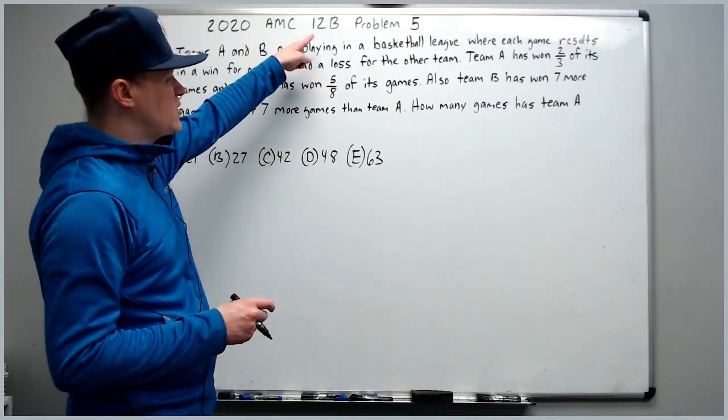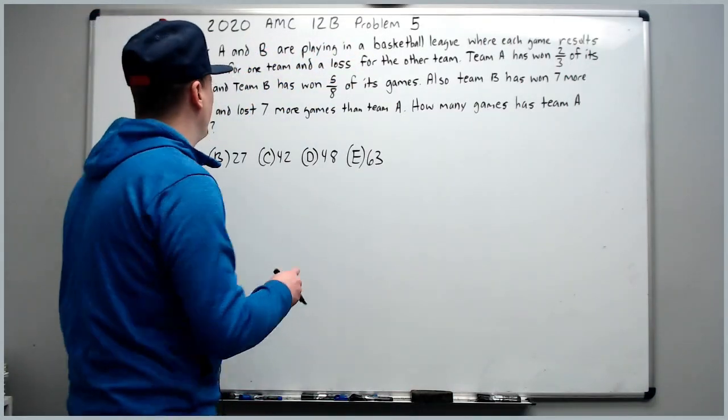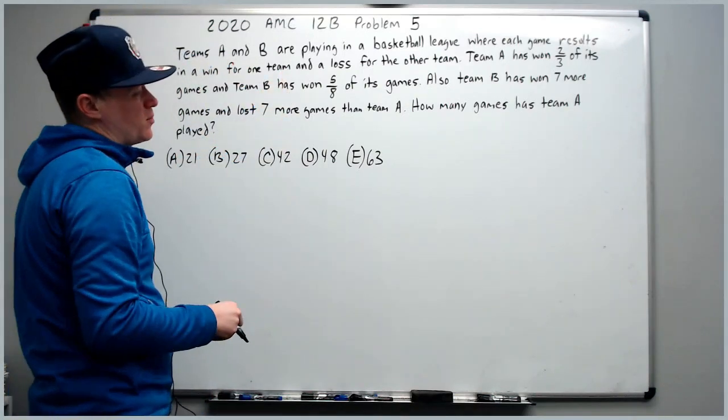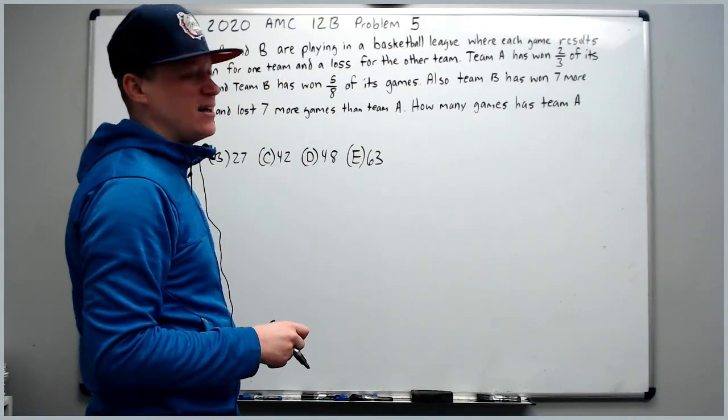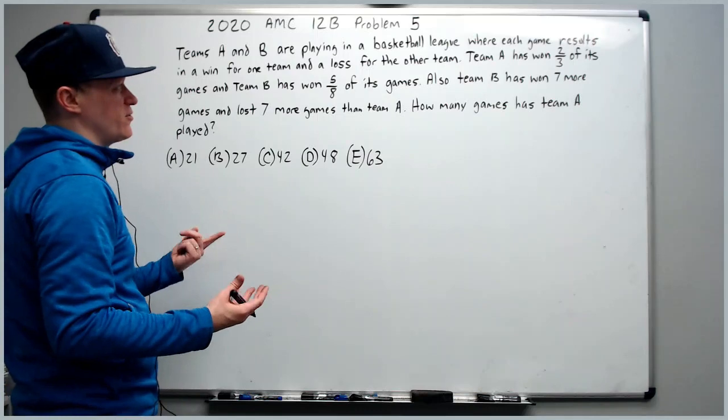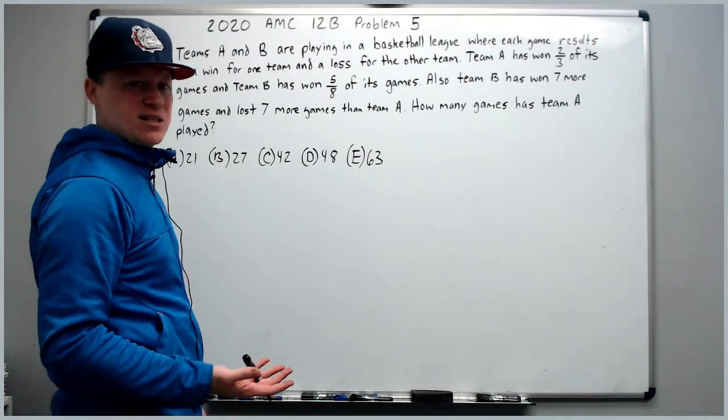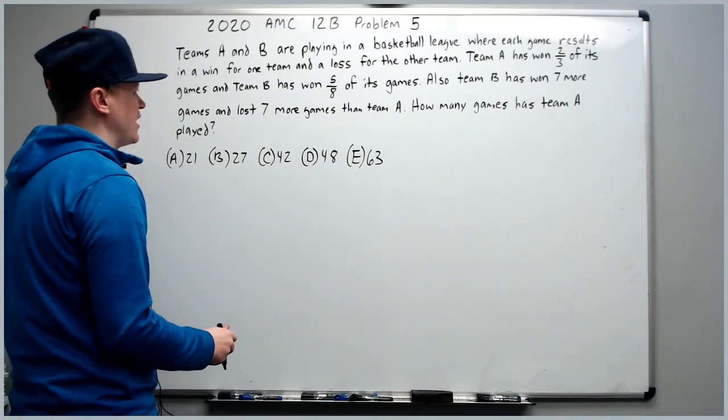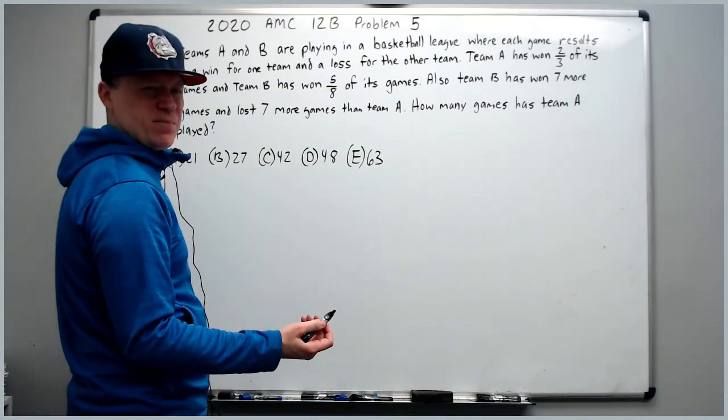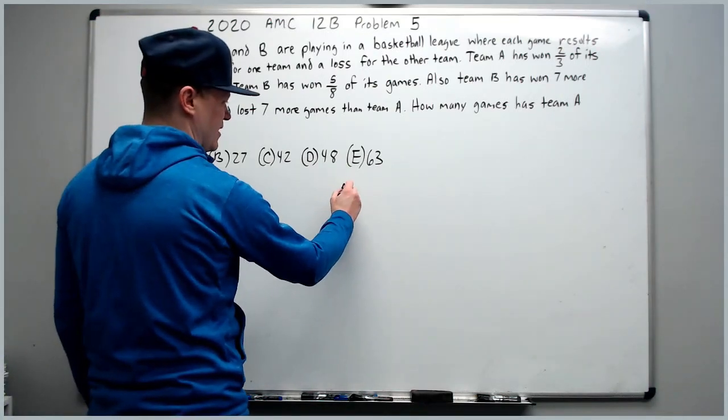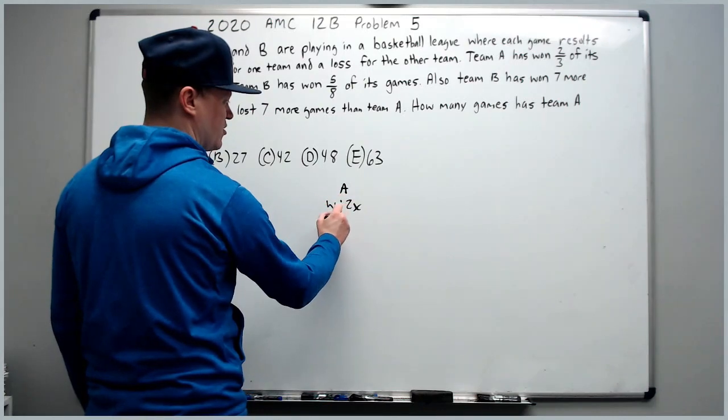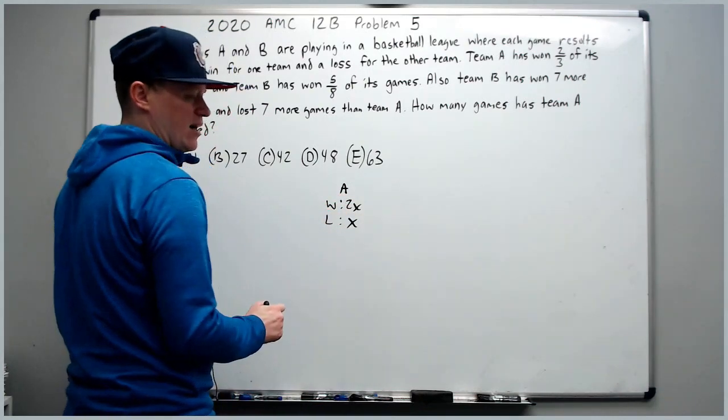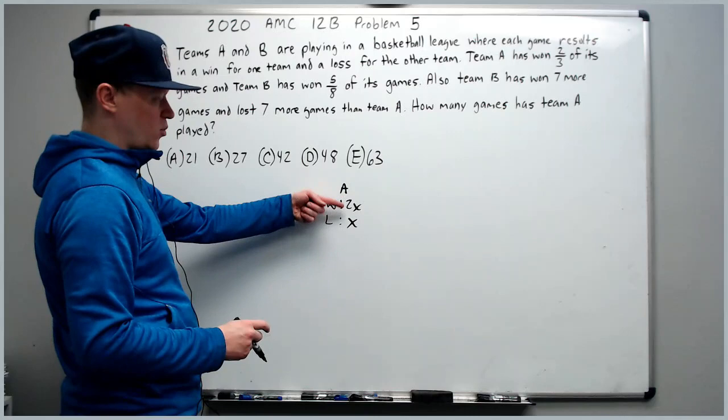This is the 2020 12B problem number 5. Teams A and B are playing in a basketball league where each game results in a win for one team and a loss for the other team. So no ties. Team A has won two-thirds of its games. Team A is going to win two games for every loss they have. This is a 2 to 1 ratio, but that's two-thirds of total games.